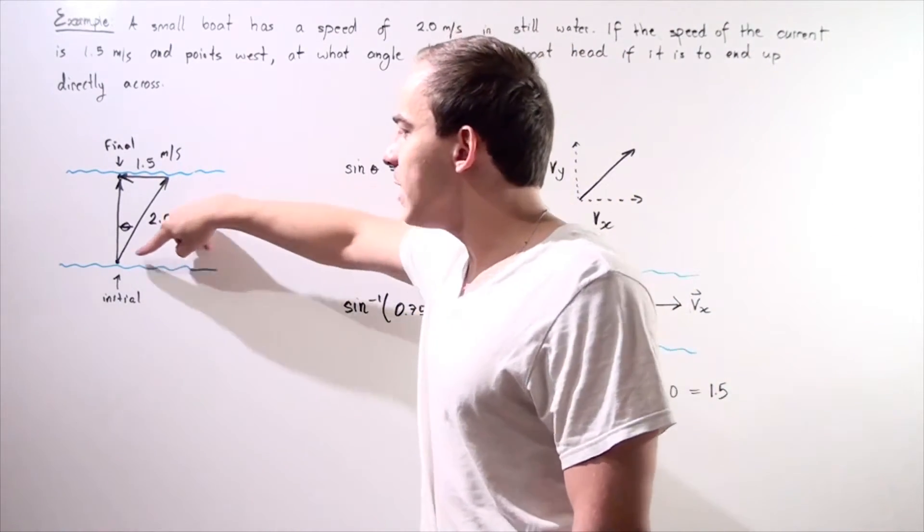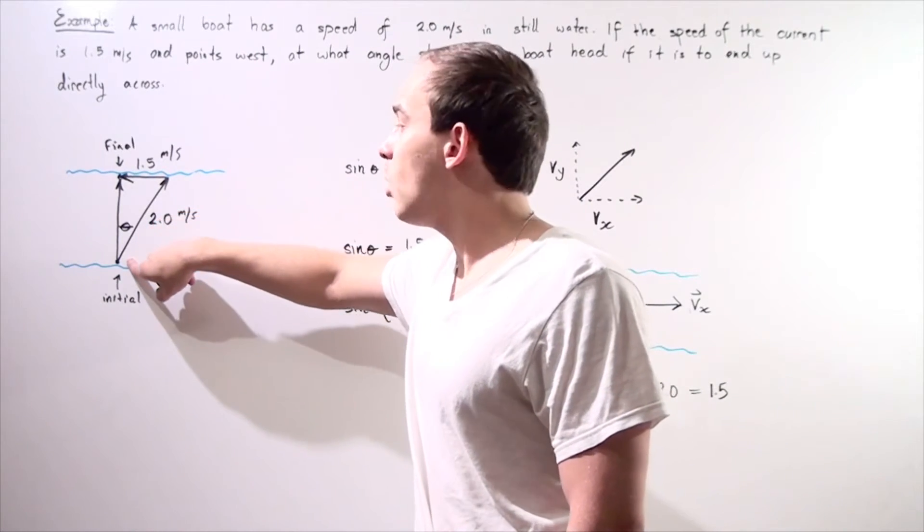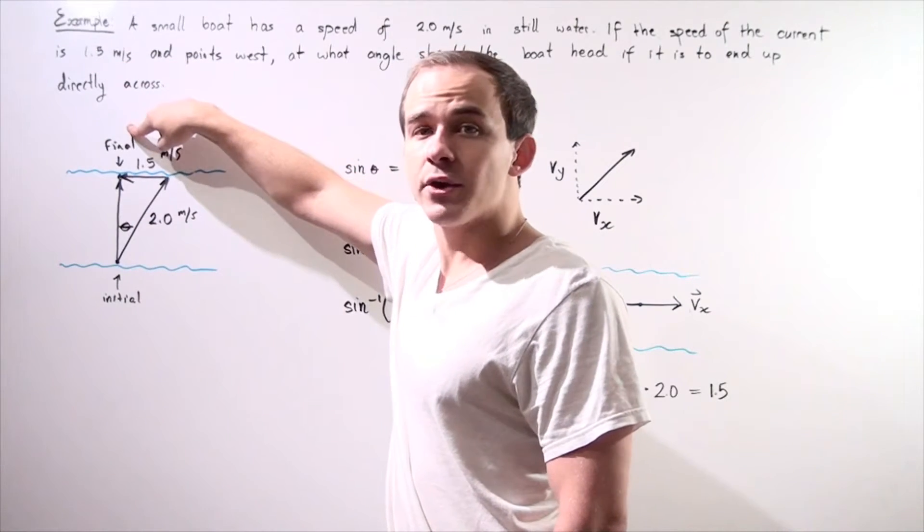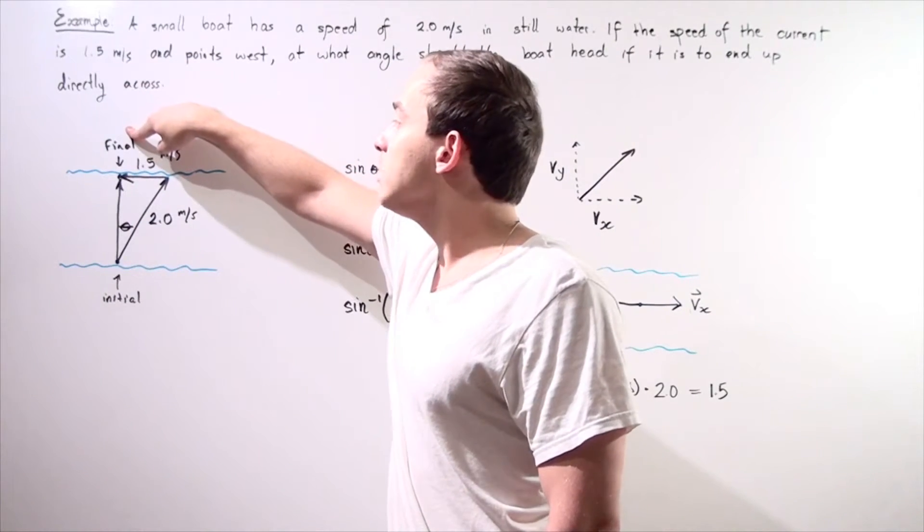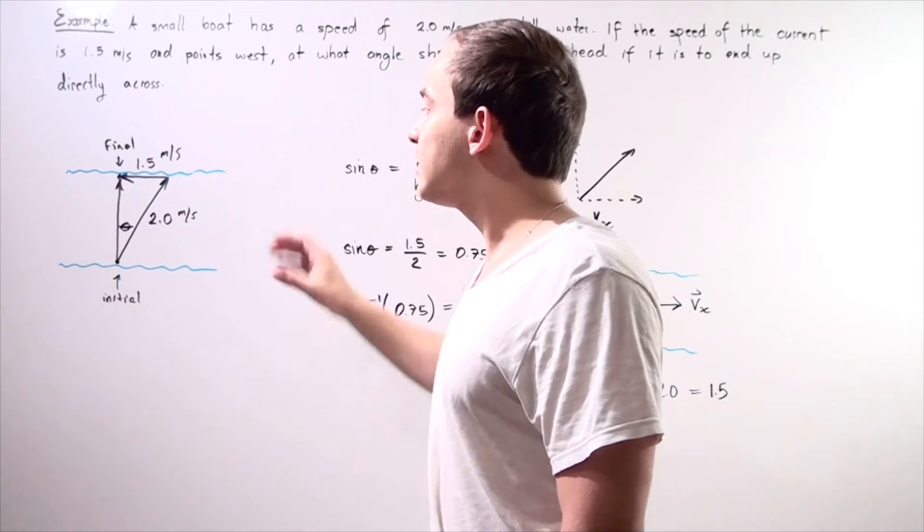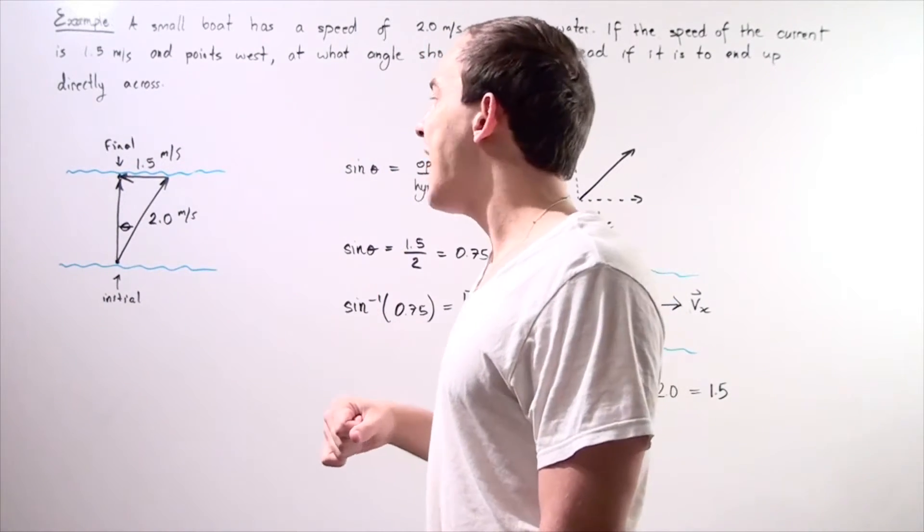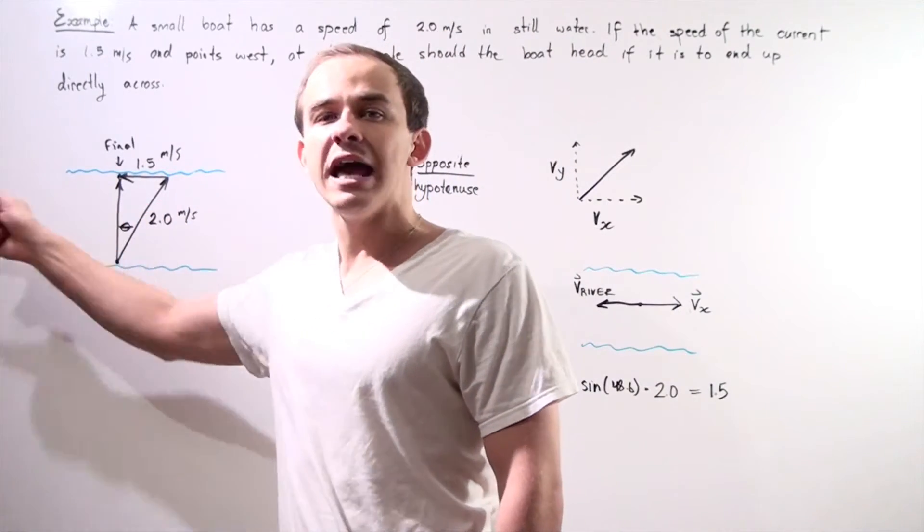We begin at the initial position and we want to end up at this final position directly across our initial position. We're making the assumption that the current in the river has a magnitude of 1.5 meters per second and points to the left.